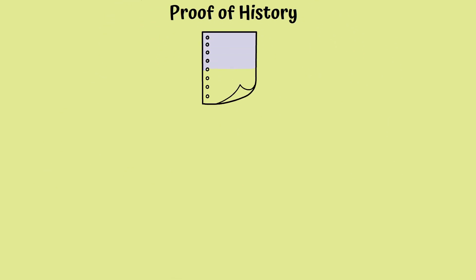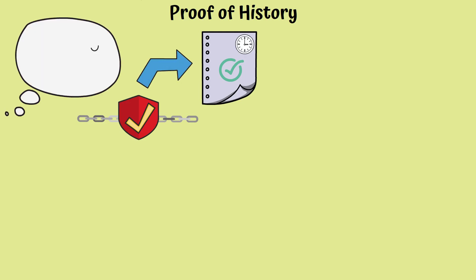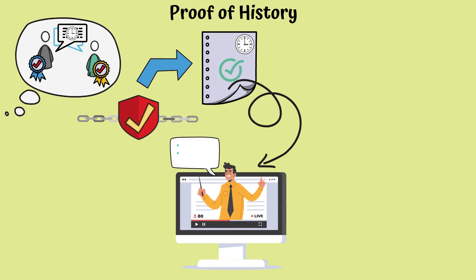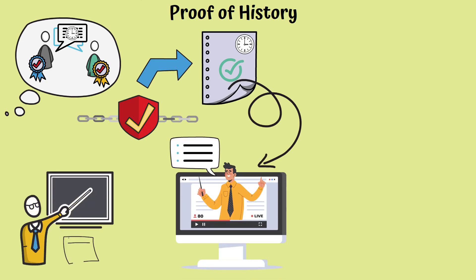Proof of History lets you create a historical record that proves that an event has occurred on the blockchain at a specific moment in time, while other blockchains need validators to talk to one another in order to agree that time has passed. Today, we will learn what this means and what other features it has. By the end of the video, you'll be an expert.